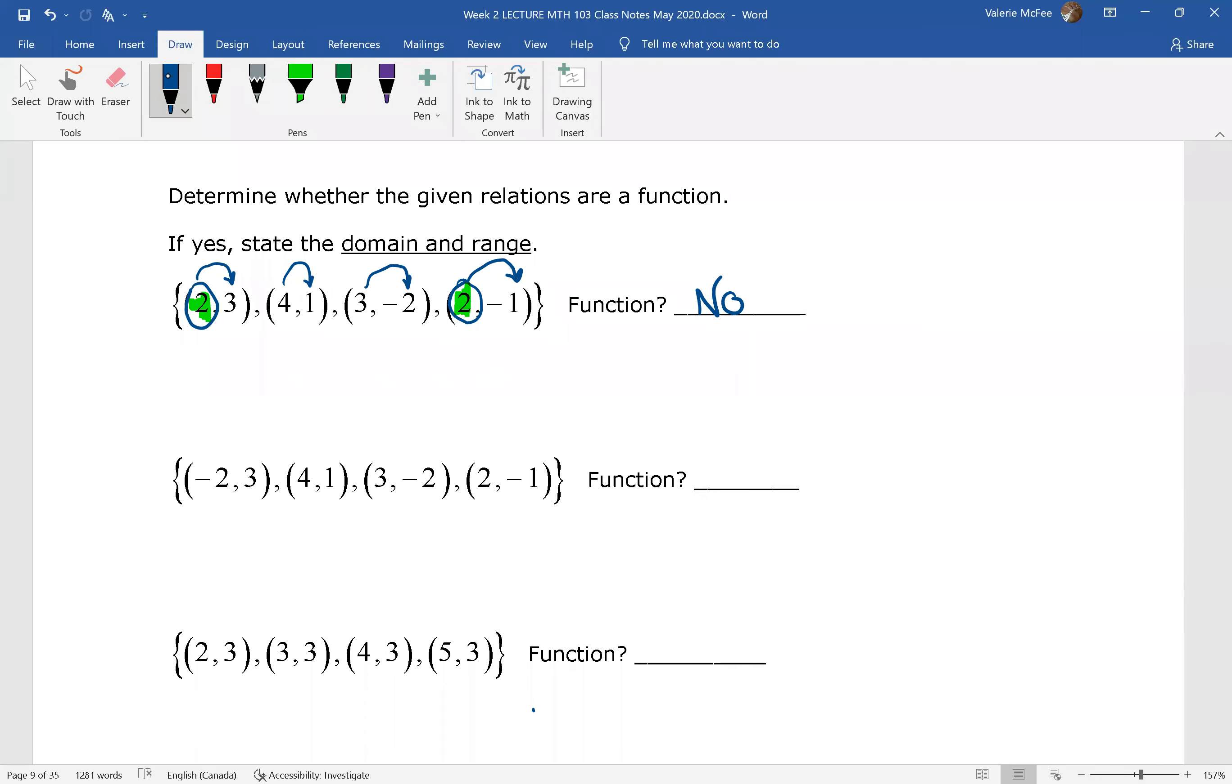Why don't you stop and look at the next relation, decide whether or not it's a function. Yes, this one is a function. Every value of X corresponds to exactly one Y. So we can find the domain and the range. The domain is the set of X values. The range is the set of Y values.